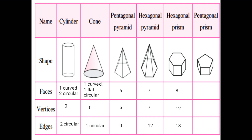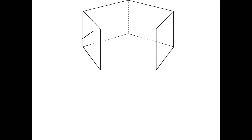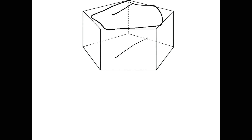Last is pentagonal prism. Number of faces is 7. Front side is a square: 1 piece, then 2nd, 3rd, 4th, 5th, 6th piece. Then this one — 6th and 7th pieces. Top side is a pentagonal shape and bottom side is also pentagonal shape. Total there are 7 pieces.